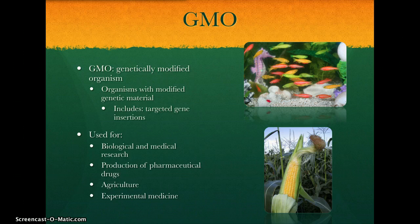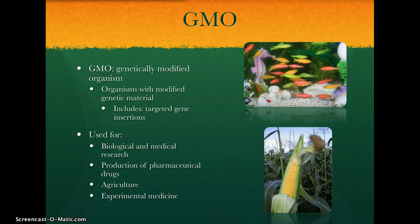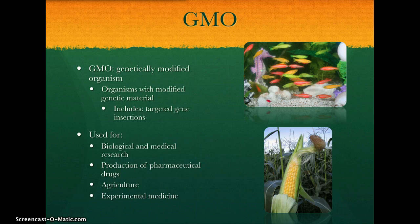GMOs actually include target gene insertions. Target gene insertion is when you take a gene from one species and put it in another. A good example of this is when the GFP protein in jellyfish was taken and placed in fish. This GFP protein is what makes jellyfish fluorescent, so when they put it in the fish, it makes them fluorescent too.